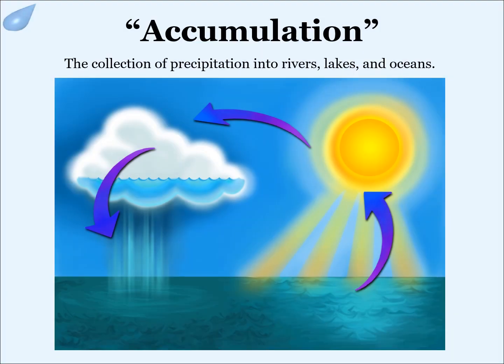Accumulation is the collection of precipitation into rivers, lakes, and oceans. The ocean is an integral part of the water cycle and is connected to all of the Earth's water reservoirs via evaporation and precipitation processes.